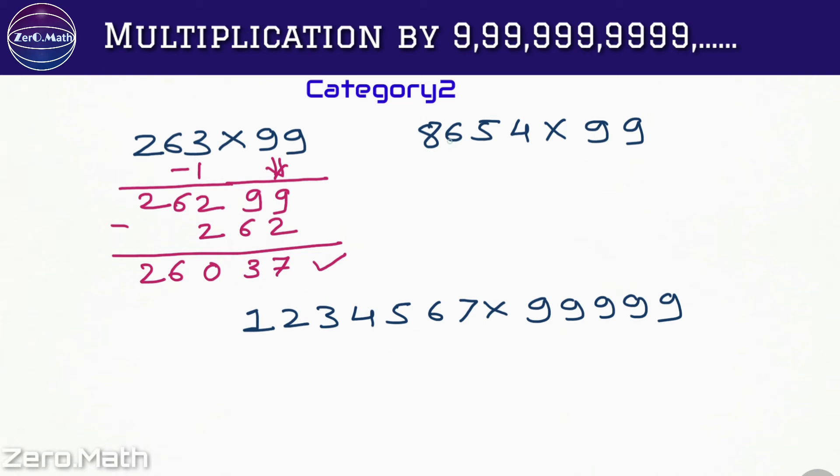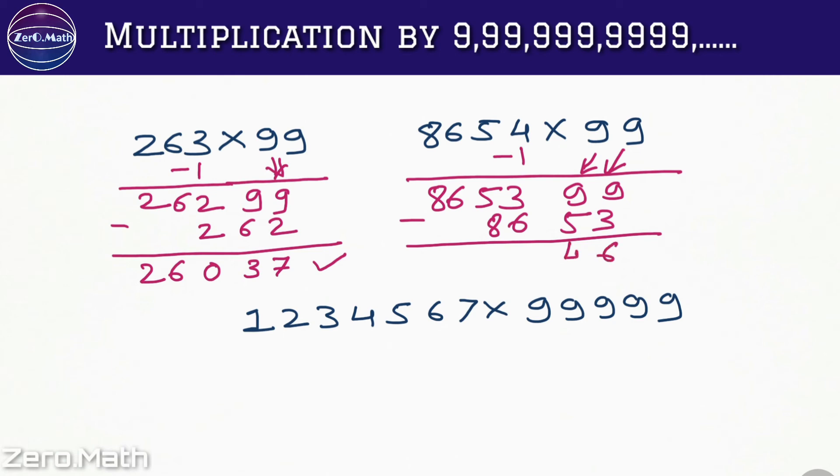Let's solve the next example: 8654 into 99. Let's subtract 1 from here, we will get 8653. Take this 99 as it is and then subtract this 8653 from the above number. So 9 minus 3 is 6, 9 minus 5 is 4, 13 minus 6 is 7, 14 minus 8 is 6, 6 minus 1 is 5, and 8. So this is our answer.